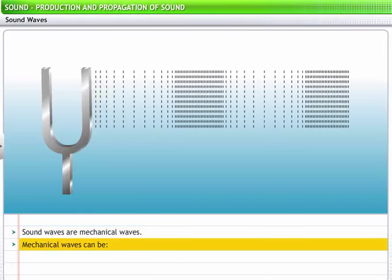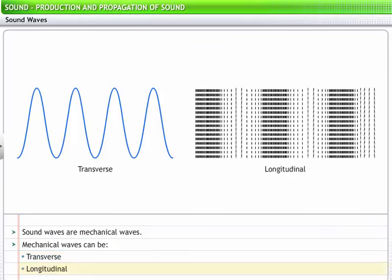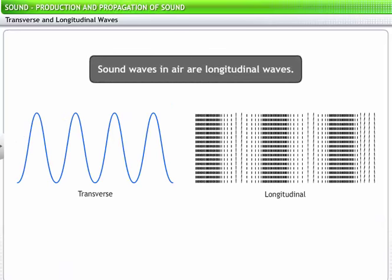A mechanical wave can be a transverse wave or a longitudinal wave. Sound waves in air are longitudinal waves. To understand what that implies, we need to first understand the two categories of waves.